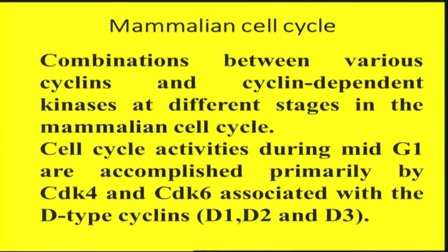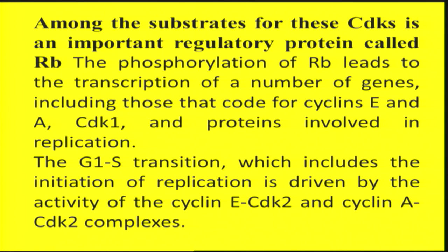As far as mammalian cell cycle is concerned, cell cycle activities during mid-G1 are accomplished primarily by CDK4 and CDK6 associated with cyclin D-type, and there are three different types of D-cyclins: D1, D2, and D3. Among the substrates for these CDKs is the important regulatory protein retinoblastoma or RB. Phosphorylation of retinoblastoma leads to transcription of genes including those coding for cyclin E, cyclin A, CDK1, and other proteins involved in replication, driving the G1 to S transition.